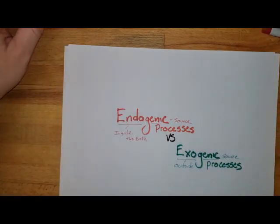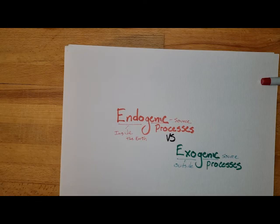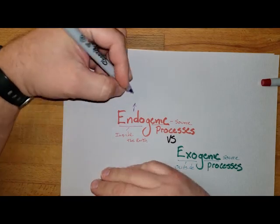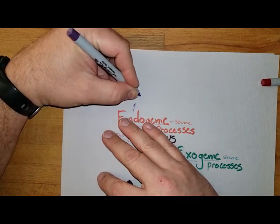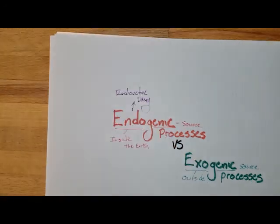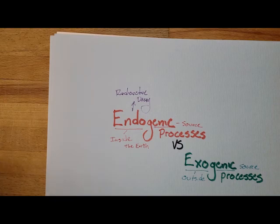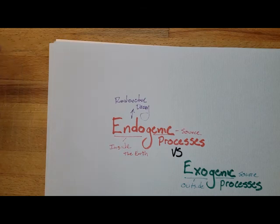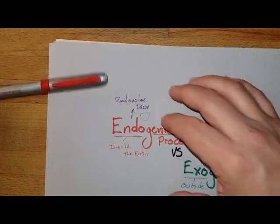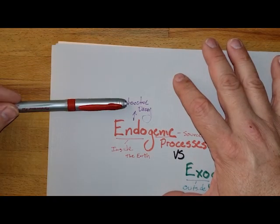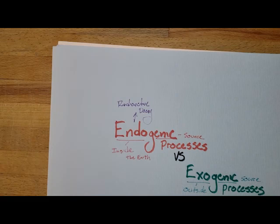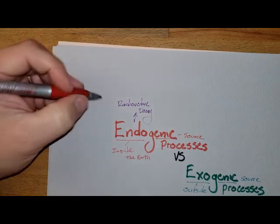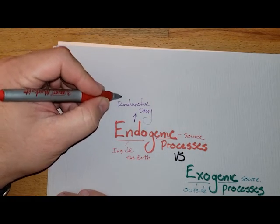The main source of all of our endogenic processes is going to be radioactive decay. Inside the earth, there are a lot of atoms that are starting to break down, and because they're breaking down it makes it very, very hot. As geologists dig deeper down into the earth, they find that it is very hot down there. This radioactive decay causes some major movements.